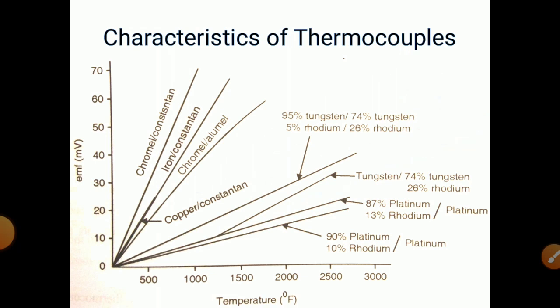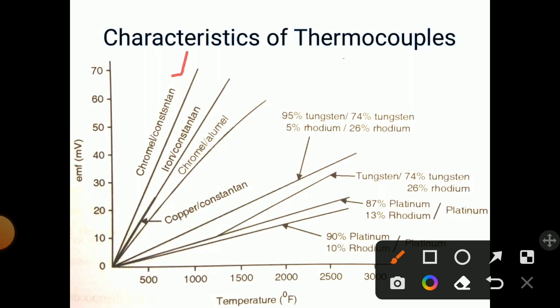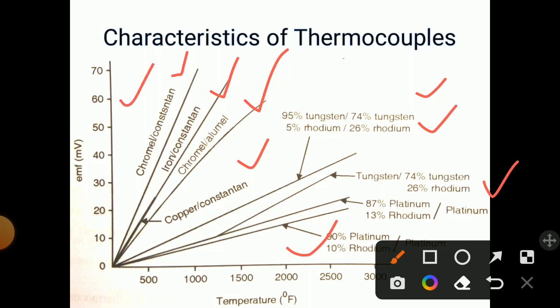Looking at the characteristics of thermocouples: on the x-axis temperature is shown and on the y-axis EMF (voltage) is shown. Depending upon the pair of materials, the characteristics differ. Four famous thermocouple pairs are: chromel-constantan, iron-constantan, chromel-alumel, and copper-constantan. Most show a linear increase in voltage as temperature increases. Other materials like tungsten-rhodium and platinum-rhodium give less sensitivity.